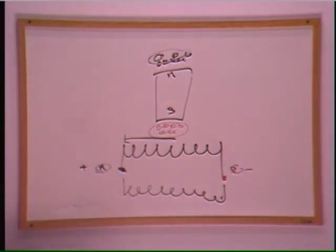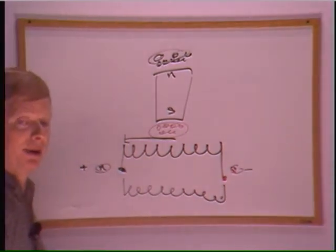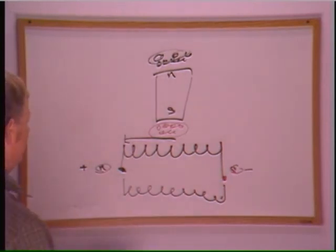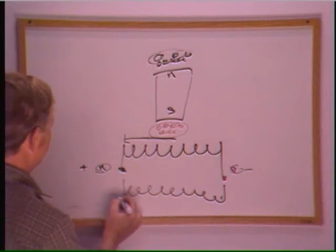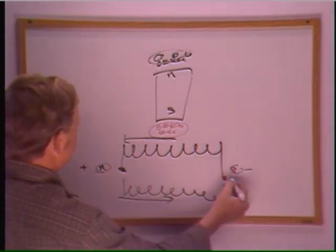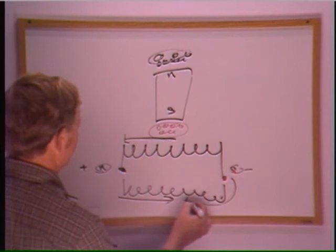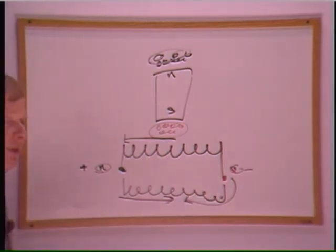Because that's all electricity is, is north and south monopoles that have been separated. Now, when you recombine these, these north monopoles are going to flow in this direction. A south monopole will flow in that direction because opposites attract.